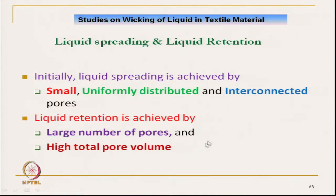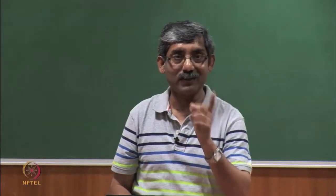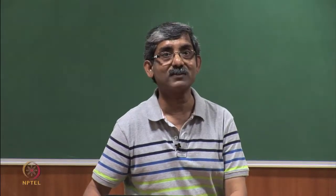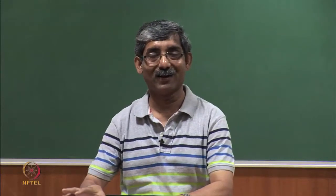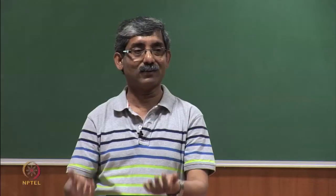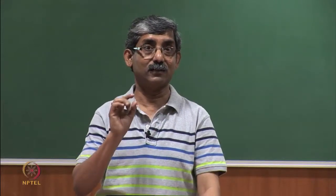If we have larger pores, the liquid is going to stay there — it cannot create capillary pressure. Whether we want that structure or a smaller, uniformly distributed, interconnected pore structure depends on the application. If our idea is to distribute and transmit moisture, we need the first type of structure with small pores. If we want to retain liquid — like for absorbent wipes — we need larger pores. This understanding is very important to design clothing.